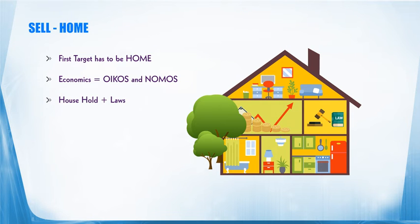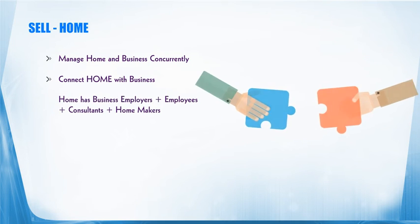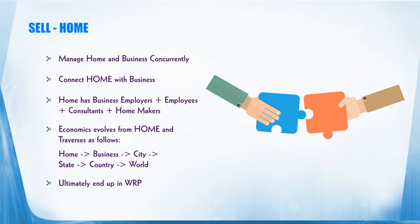Now comes the most important constituent: home. Why is home really important? When I talk about business software, where does home come in? The whole concept of economics itself started from home. Economics comes from two different terms, ecos and nomos, which means household laws. So when you talk about selling to home, it means you are starting your economics. By selling to home, one should be able to manage home and business concurrently. Your home has parents who are business employers or employees, consultants, homemakers, students. If there is a software which caters to the requirements of home and can connect home with your business, then it's something really unimaginable but fantastic.